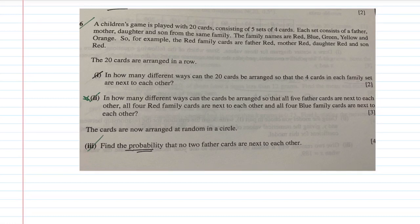A children's game is played with 20 cards consisting of five sets of four cards. Each set consists of a father, mother, daughter and son from the same family. The family names are red, blue, green, yellow and orange — they're all colors. For example, the red family are father red, mother red, daughter red and son red — interesting surnames. The 20 cards are arranged in a row.